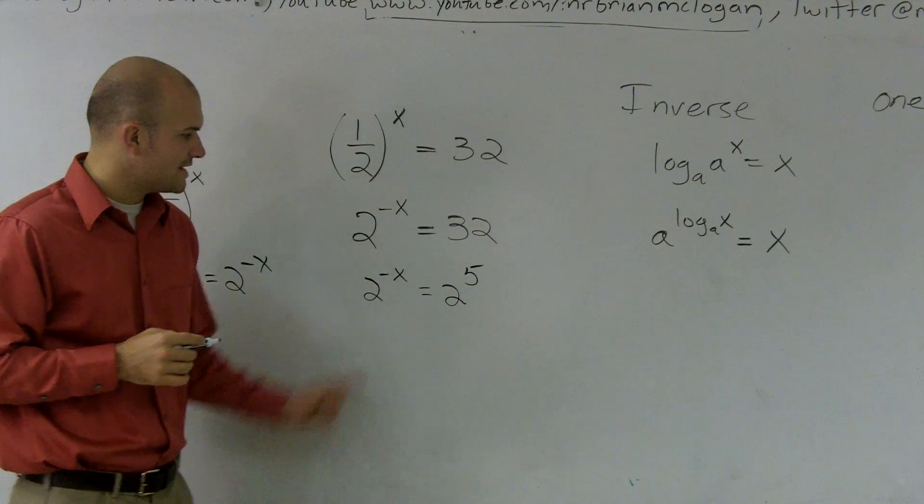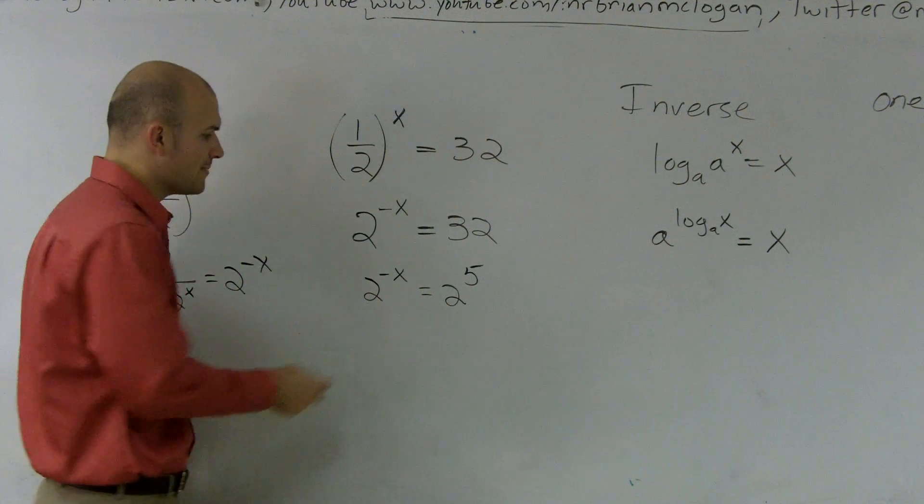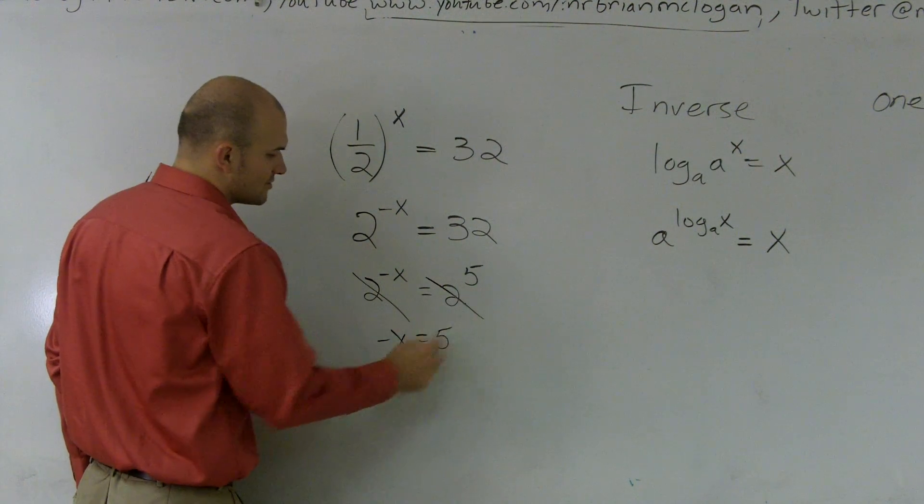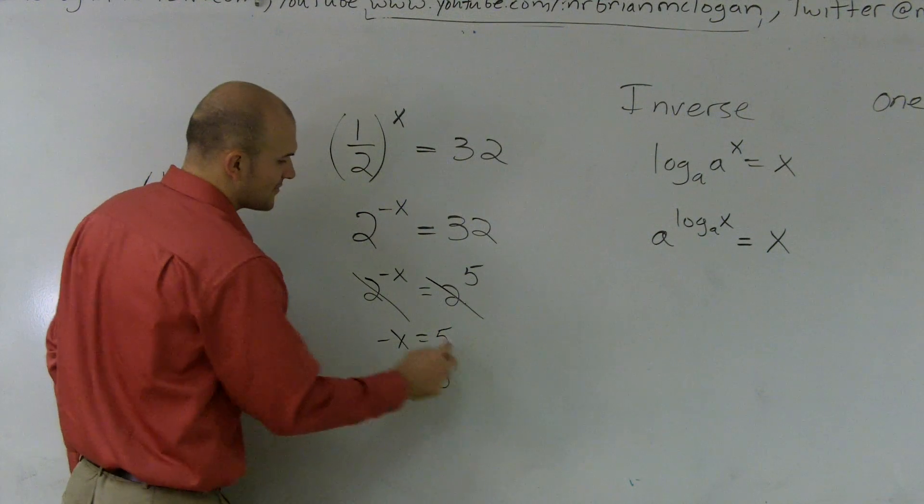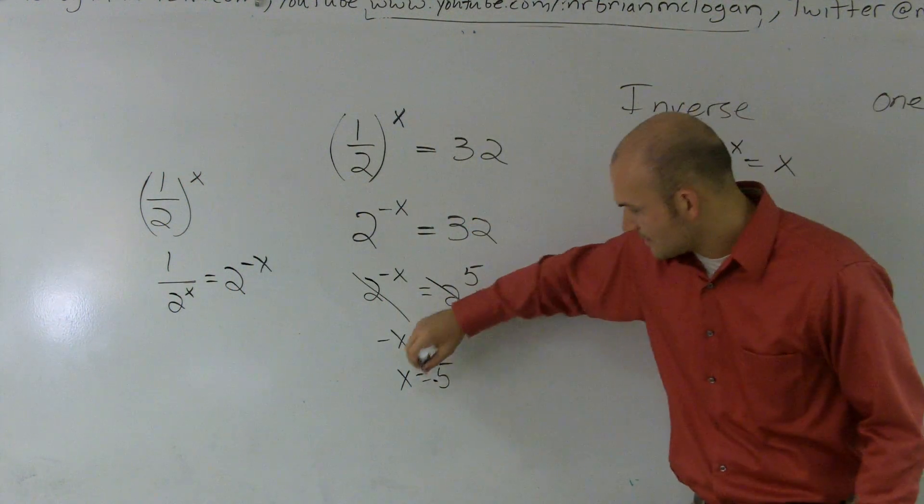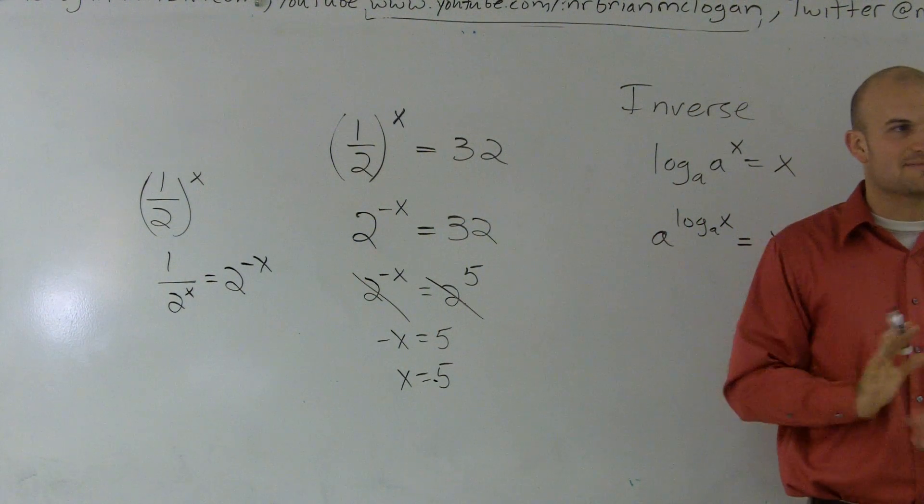So 2^(-x) is equal to 2^5. Now using my one-to-one property, -x equals 5 and x equals -5. So the key to this is don't deal with fractions. It's making your life miserable.